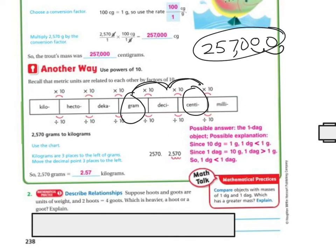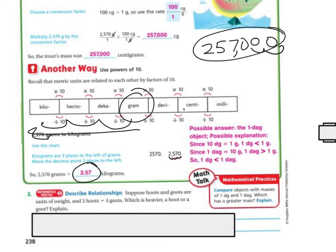Now, if I'm going from grams to kilograms, 1, 2, 3, I'm going three places this way, so I'm dividing. That means I'm going to move my decimal the other way. I'm going to go 1, 2, 3. So I'm going to get 2.57, or 2.57 kilograms.